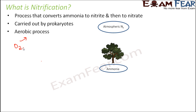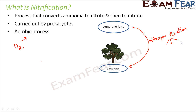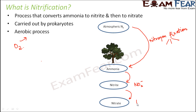Looking at the overall process so far: atmospheric nitrogen got converted into ammonia, and this process is called nitrogen fixation. This can happen in three ways — atmospheric fixation, industrial fixation, or biological fixation. The biological fixation is carried out by symbiotic bacteria present in the root nodules of leguminous plants. This ammonia then gets converted into nitrites (NO2⁻), and these nitrites in turn get converted into nitrates (NO3⁻). This entire process where ammonia is converted to nitrites and then to nitrates is nitrification.